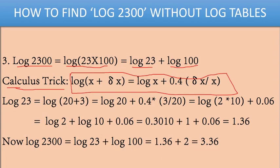Now, log 2300 is written as log(23 × 100). First, take log 23. Log 23 can be written as log(20 + 3). Now apply the calculus trick. Here, x is 20 and the incremental value δx is +3.